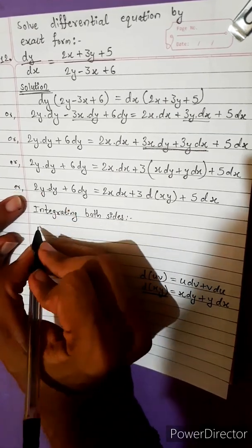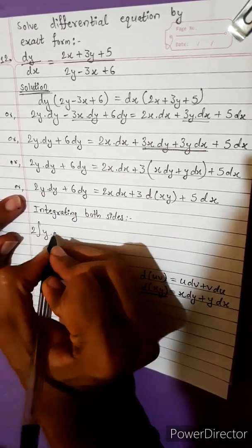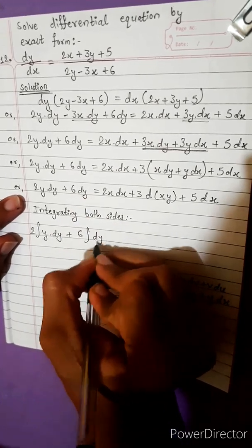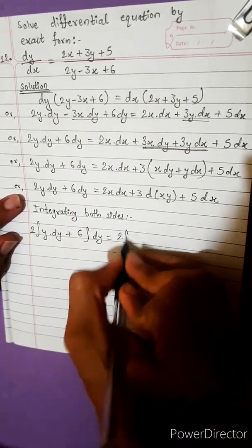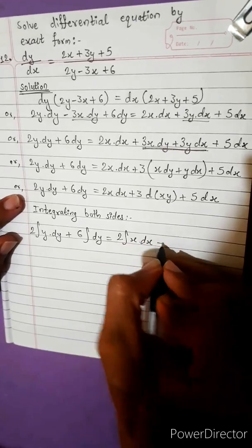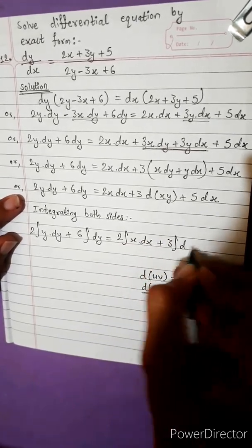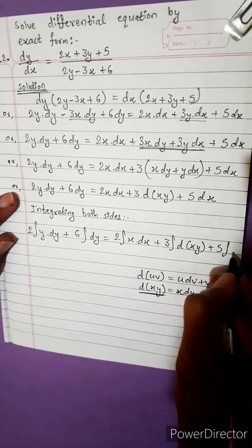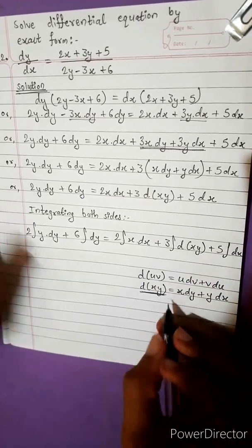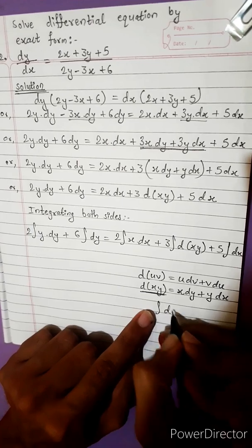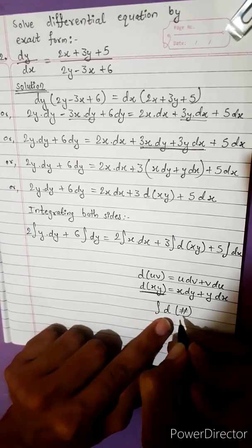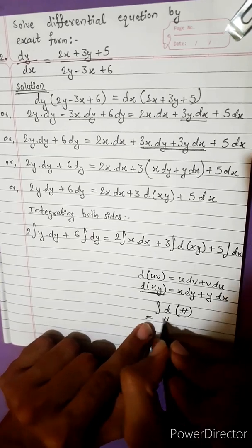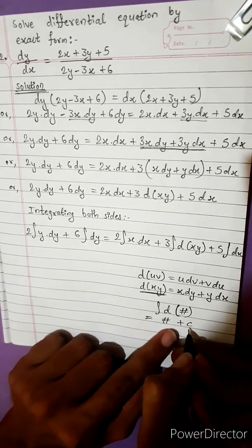Integrating both sides we get: 2 times the integral of y dy plus 6 times the integral of dy equals 2 times the integral of x dx plus 3 times the integral of x dx plus 5 times the integral of dx. Suppose k term equals 3 term plus c, where c is the integral constant.